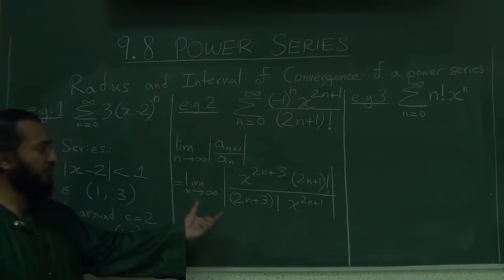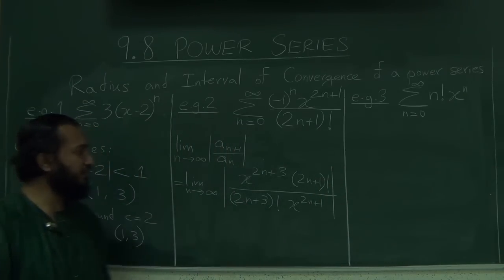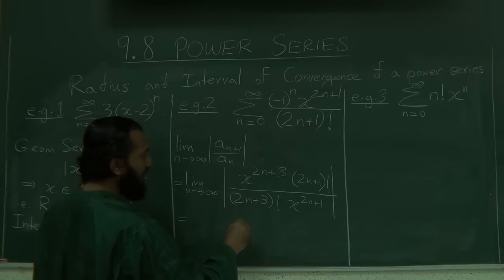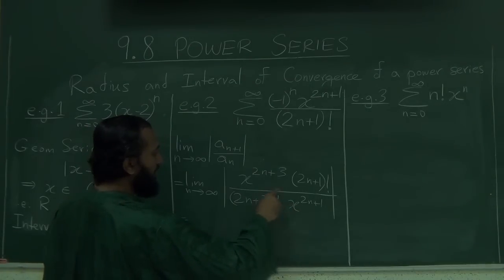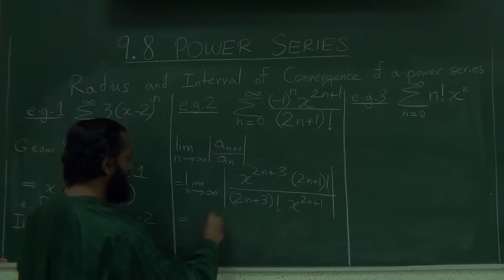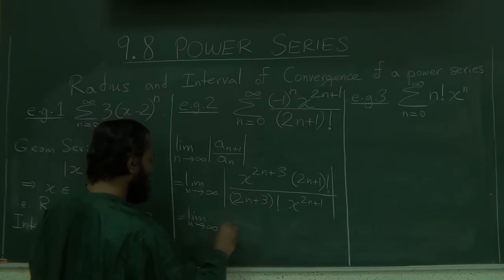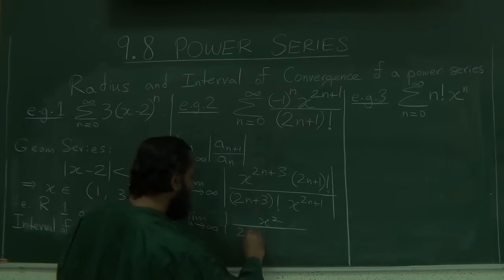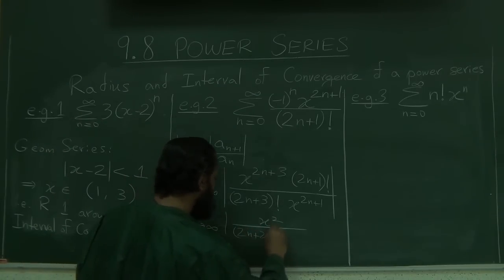Now I'm going through this thing a little bit fast, for the sake of your lecture, how much time you have to watch, but you should go through the steps yourself and calculate these things. So what happens? You get, this cancels, and you get x squared over, let's write from the word limit, limit as n goes to infinity of x squared over 2n plus 2 times 2n plus 3.